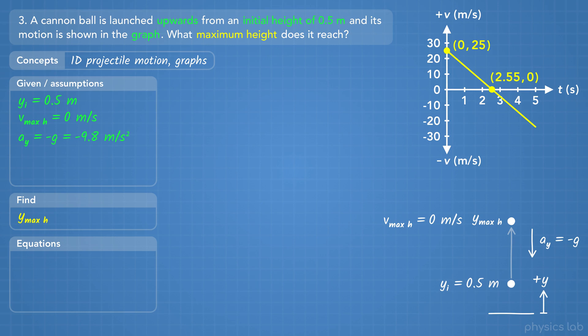Now, what information can we get from the graph? At the initial point, when t equals 0, the velocity is 25 meters per second, which is Vy initial. Then the velocity is 0 meters per second when t equals 2.55 seconds. That's the point when the ball is at the maximum height.